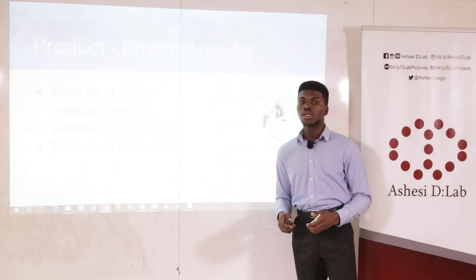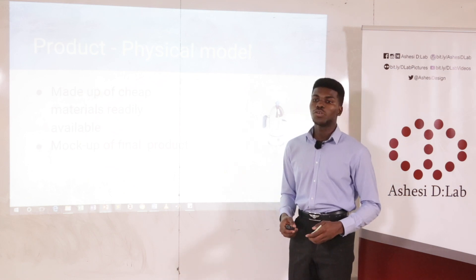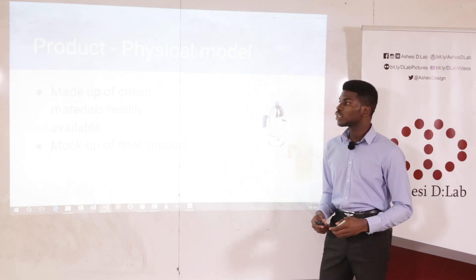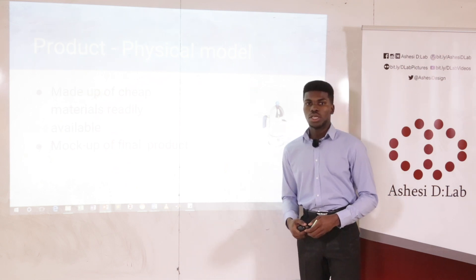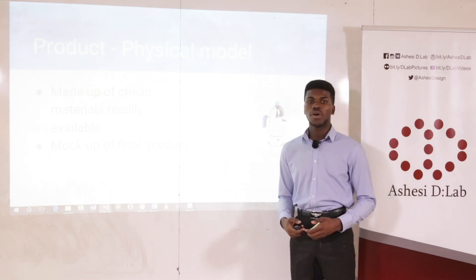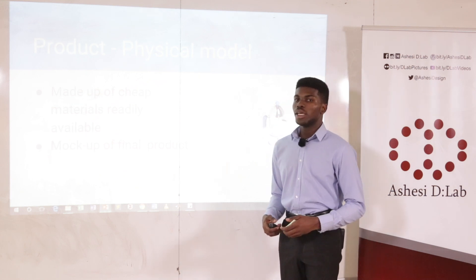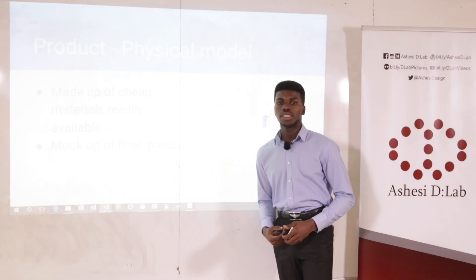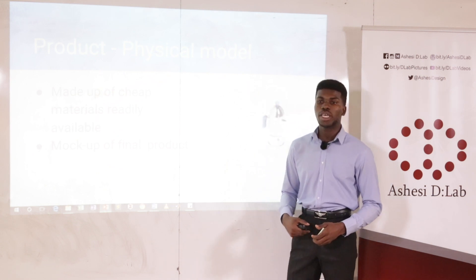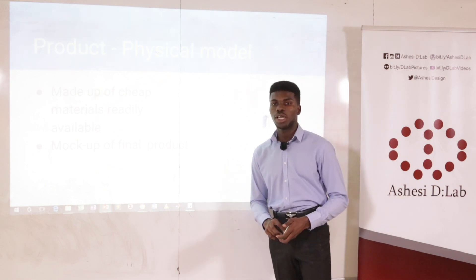Now, going to the methods of prototyping, one of them includes products. A product simply refers to bringing tangibility into existence, giving the customer a feel of how the final version is going to be like. Take the making of a flask — a flask made of aluminium can first be made with plastic. That is the prototype. You use the plastic product so that you are able to make iterations: either change or add certain features to make it suit the customer need you are trying to satisfy.